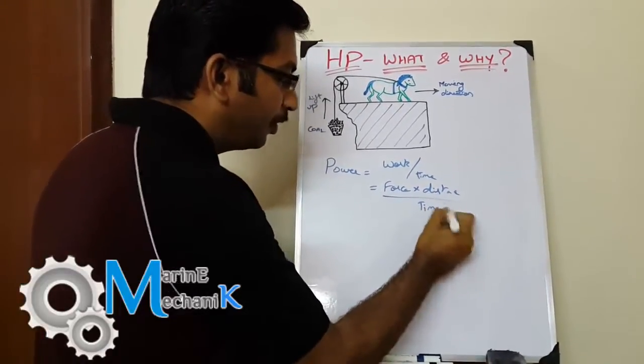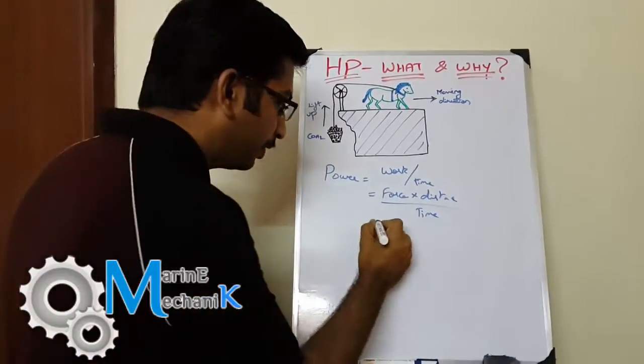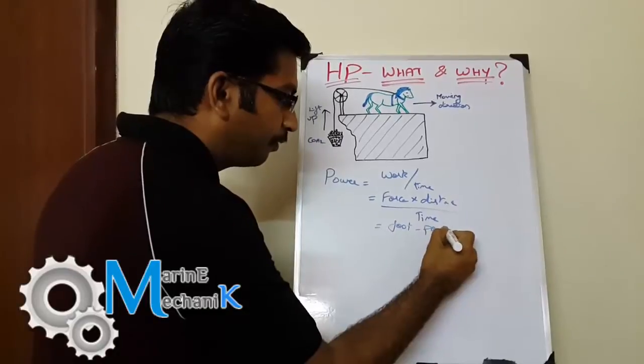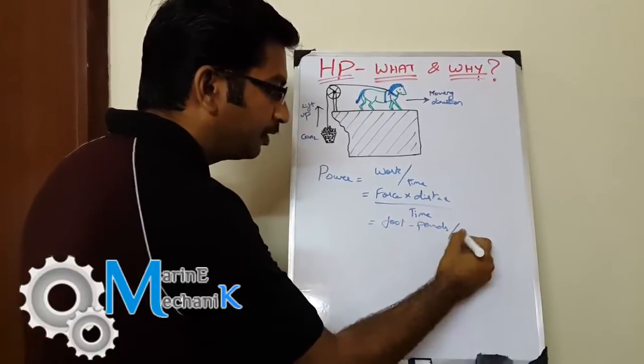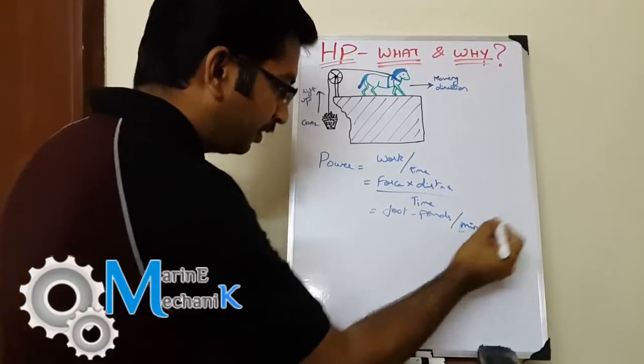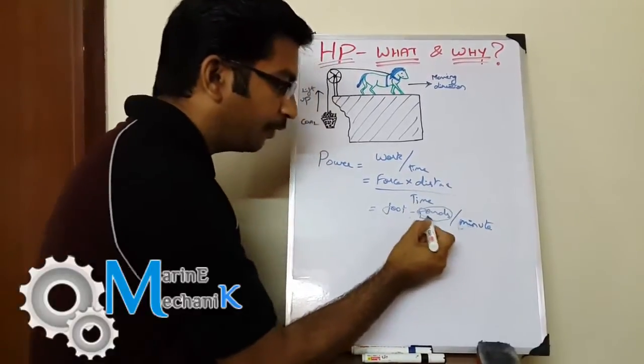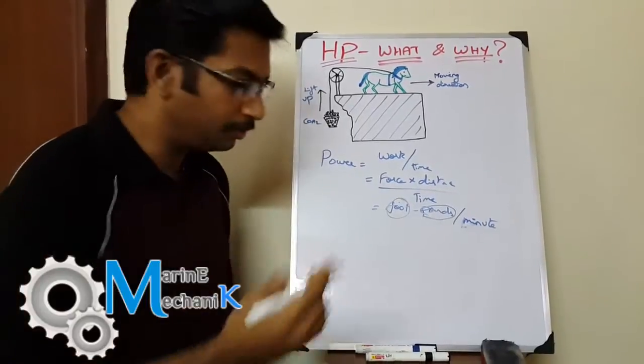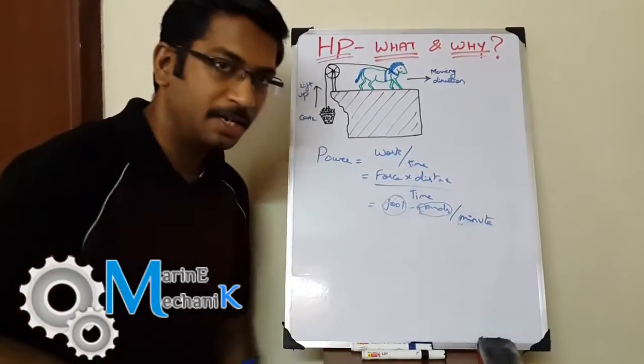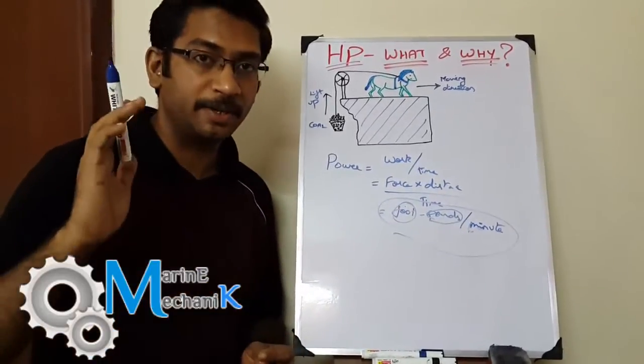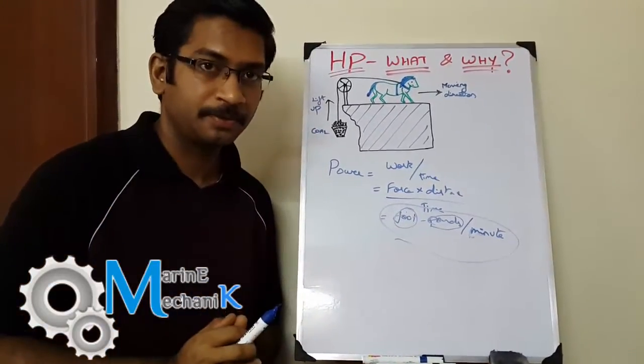In the UK, they were using foot-pounds per unit time—specifically per minute. That is, the amount of weight measured in pounds, moved over a distance measured in feet, per unit time in minutes. This was the unit of power they dealt with during James Watt's time.